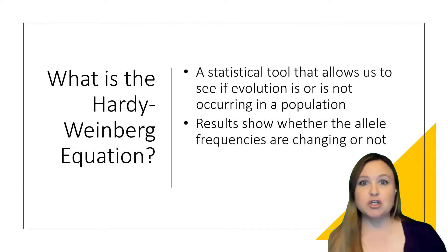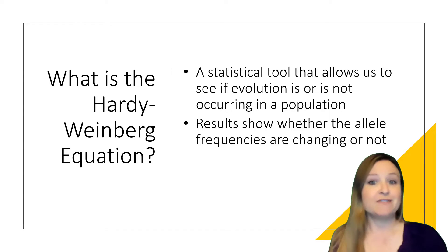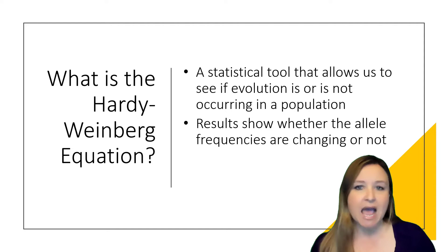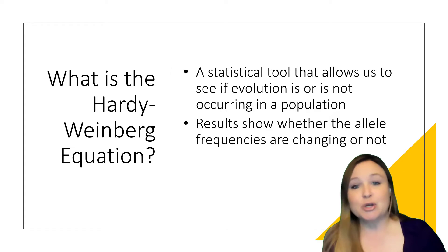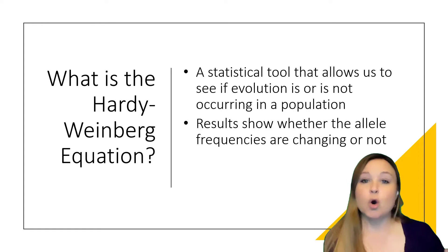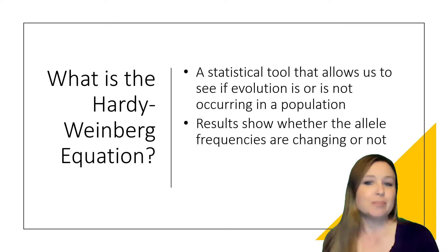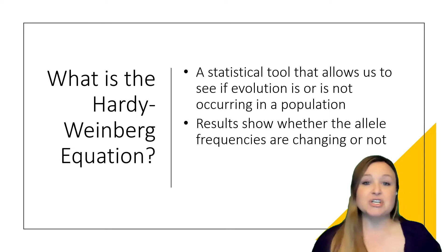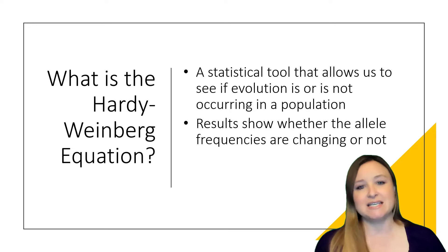You could equate it to looking back at your wardrobe five years ago — maybe you had a lot of black clothing and not as much blue clothing. Now, five years later, you look and ask: do I still have the same percentage of black and blue clothing, or do I now have lots more blue than black? So it's really just a way to compare the alleles in a population from one time to another.